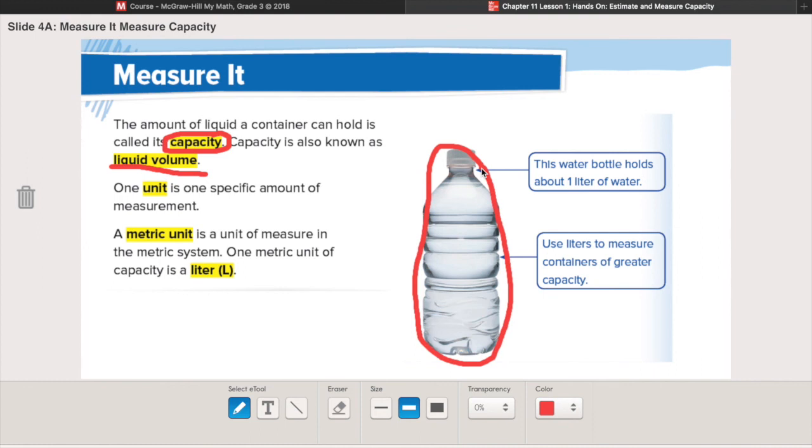We know the word unit from when we were talking about fractions. Do you remember we talked about unit fractions? Unit fractions were fractions where the numerator was one. And we also talked about units when we were doing area and perimeter. When we used the word unit, it always meant one. So if something was four units long, it meant four, one unit. A unit always means one. So one unit is one specific amount of measurement.